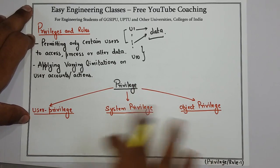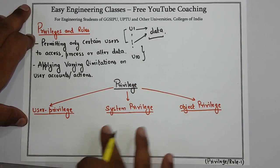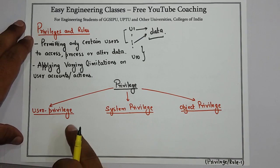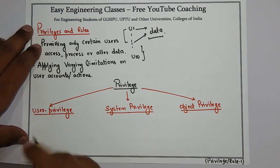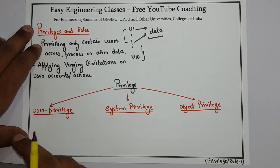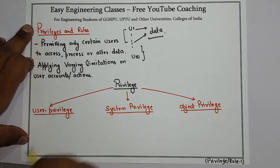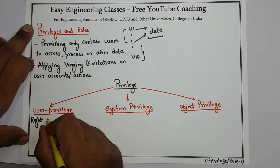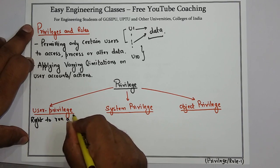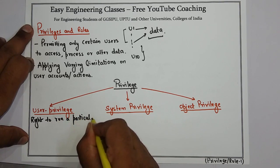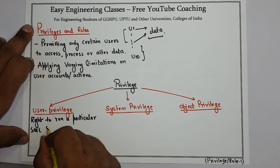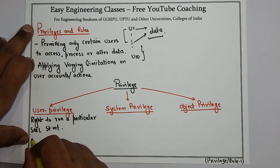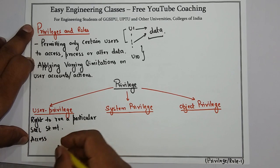There are 3 different types of privileges in Oracle Database Administration. First is user privilege, which is the simplest privilege a user can get. For example, it is the right to run a particular type of SQL statement, or the right to access an object that belongs to another user.